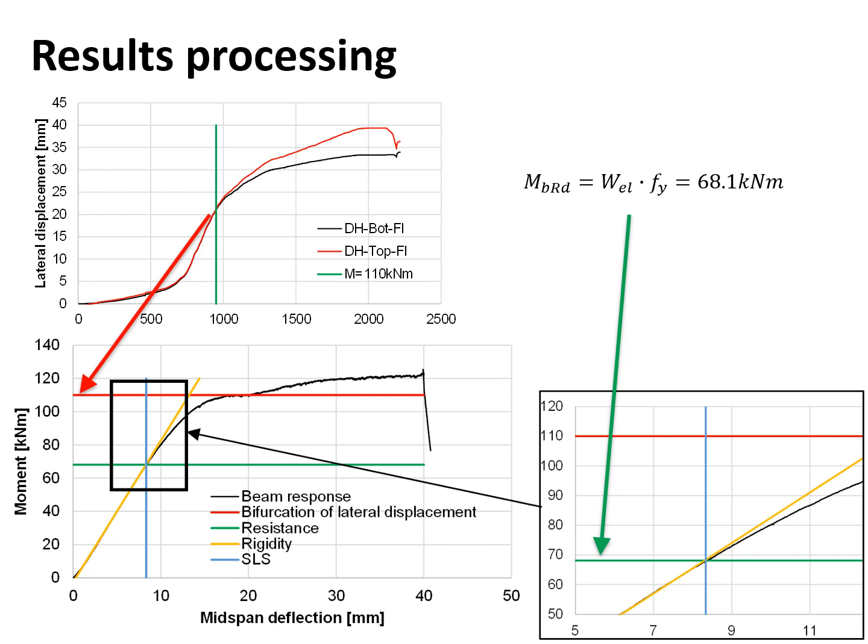moment of the beam is right at this value. From this value, the moment-deflection curve starts to show decreased rigidity, which means that plastic strains start to develop in the cross section of the beam.